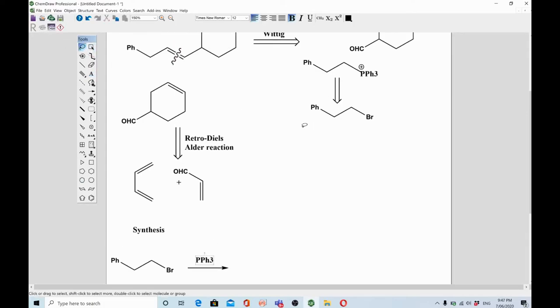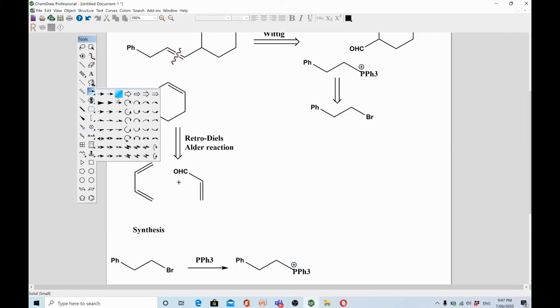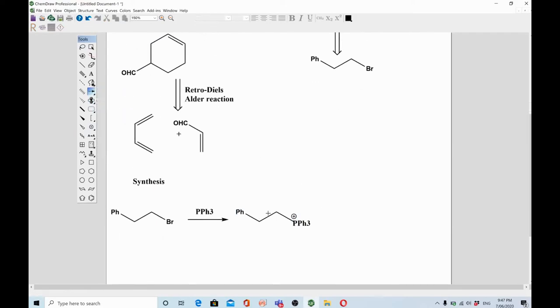When you react alkyl halide—alkyl bromide in this case—with triphenylphosphine, it will give you an ylide called Wittig ylide. You react this with a base to generate a negative charge on this carbon.